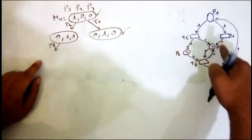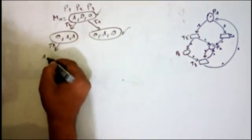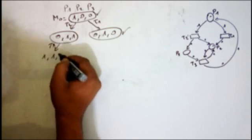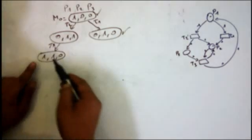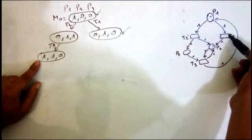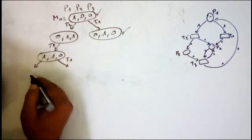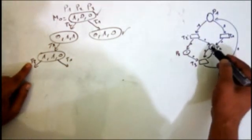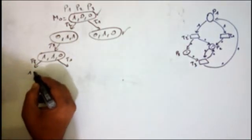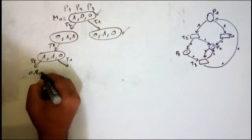When I fire T3, I remove the token from P2 and the token from P3, and I add one in P1 and one in P2. So I get the marking (1, 1, 0). From this marking I can fire T1 or T2. If I fire T2, I remove the token from P1 and add one in P2 and one in P3, so I get (0, 2, 1).